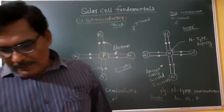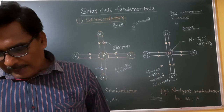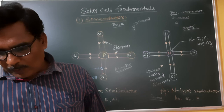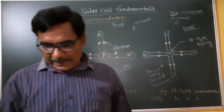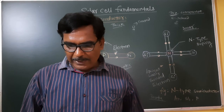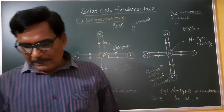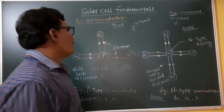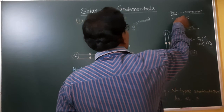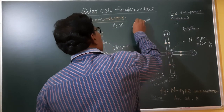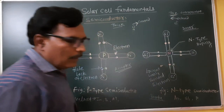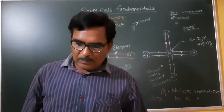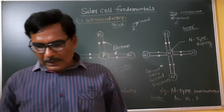The energy of photons in light waves is imparted to molecules and atoms at the PN junction, resulting in the liberation of electron-hole pairs. Electrons are released from the N-type material and holes are created from the P-type material. Electrons carry negative charge and holes carry positive charge.